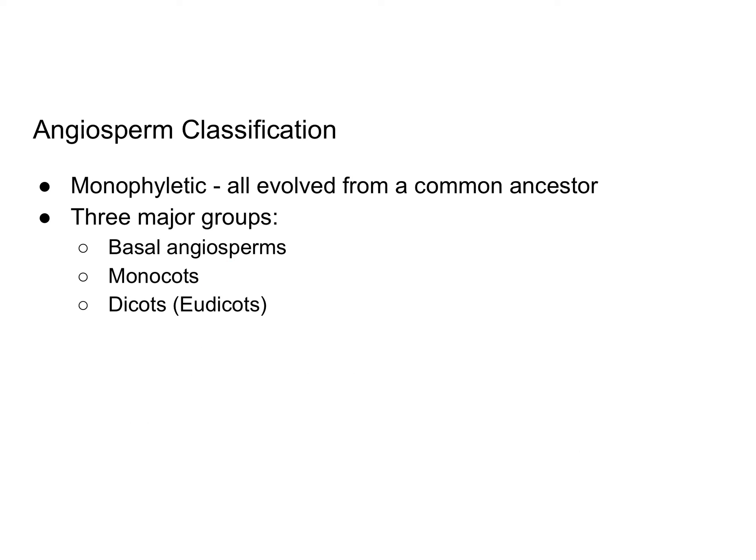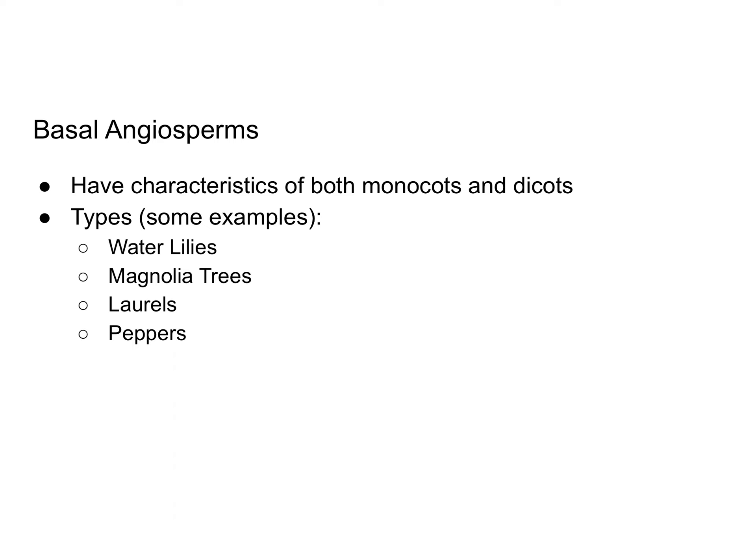It is believed that all angiosperms evolved from a single common ancestor, which makes them monophyletic. There are three major groups that have diverged from this common ancestor: basal angiosperms, monocots, and dicots, which are also called eudicots. Basal angiosperms have characteristics of both monocots and dicots. Some examples are water lilies and magnolia trees, which have large white flowers commonly seen in South Carolina.